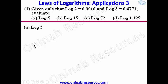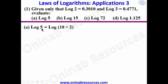Given only that log 2 = 0.3010 and log 3 = 0.4771, evaluate: a) log 5, b) log 15, c) log 72, and d) log 1.125. Starting with part a, we have log 5. The idea is to look at the given logarithms and see if we can express 5 as a product of 2 and 3. Since this is base 10, we also take 10 into consideration — can we divide 10 by any of these numbers to give 5? Yes, 10 divided by 2 gives 5.